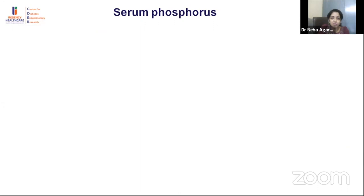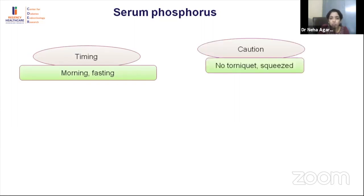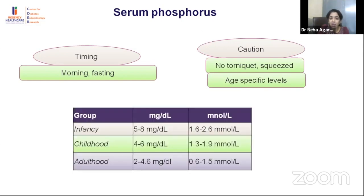Serum phosphorus should also be collected as a fasting serum sample. Since phosphorus is an intracellular ion, a tourniquet or squeeze sample must not be used as it gives falsely high values. Age-specific phosphorus reference ranges must always be used, because phosphorus levels in children are comparatively higher than in adults — these should not be confused with pathologically elevated phosphorus when adult reference values are used.